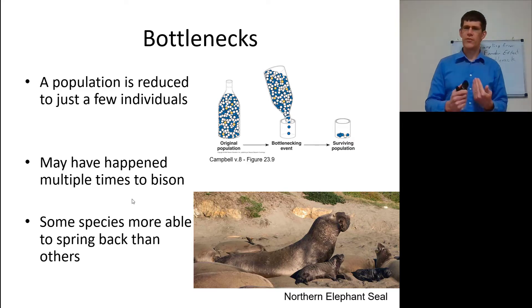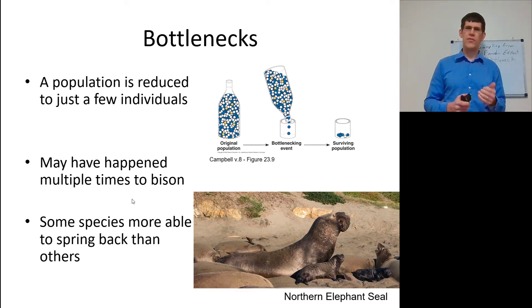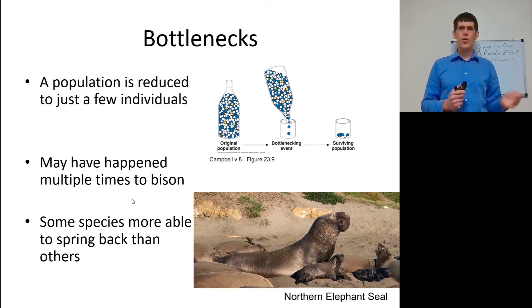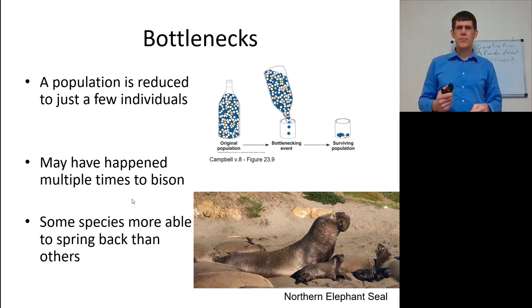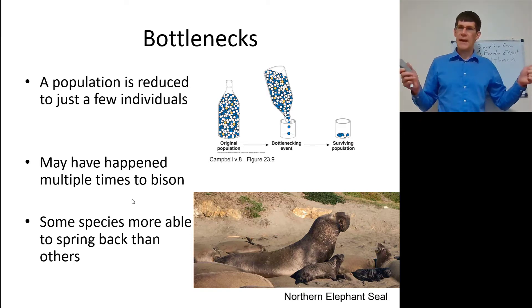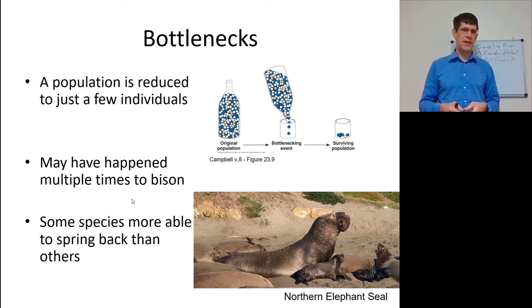This definitely happened with the Northern Elephant Seal, which was hunted nearly to extinction by settlers. They were allowed to rebound in wildlife preserves. Some species are more able to spring back than others, depending on the genetic diversity that survives in a bottleneck event.